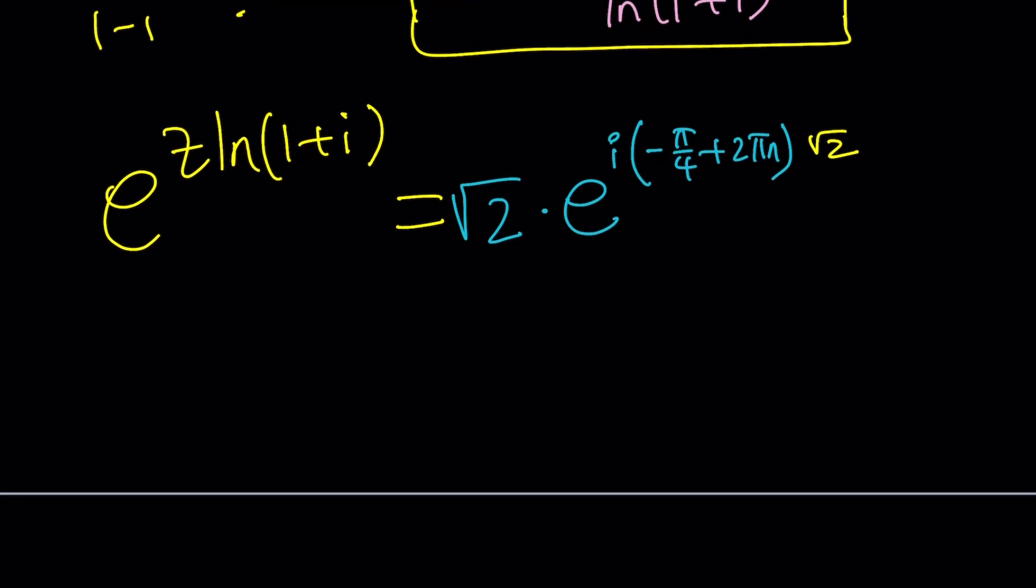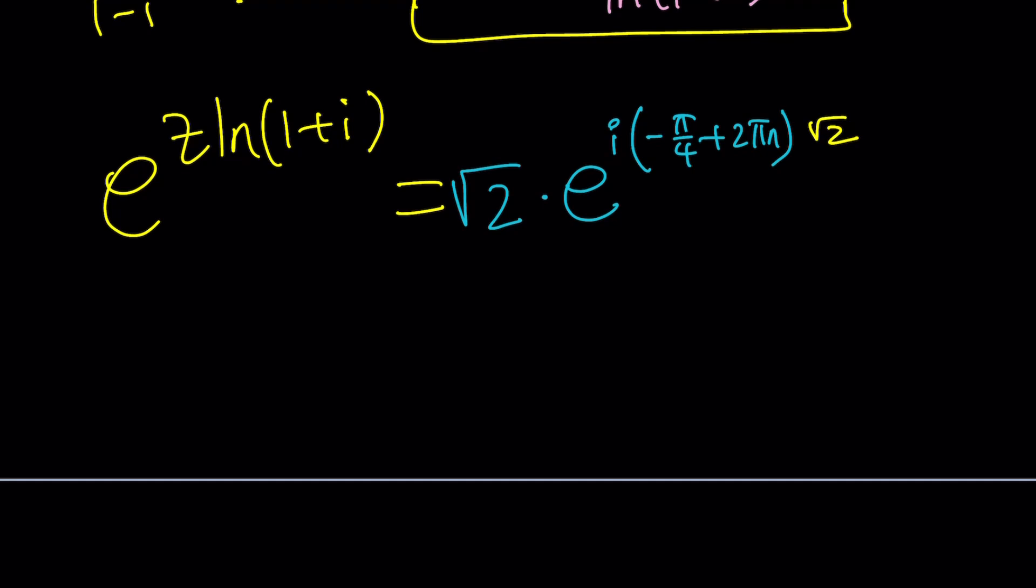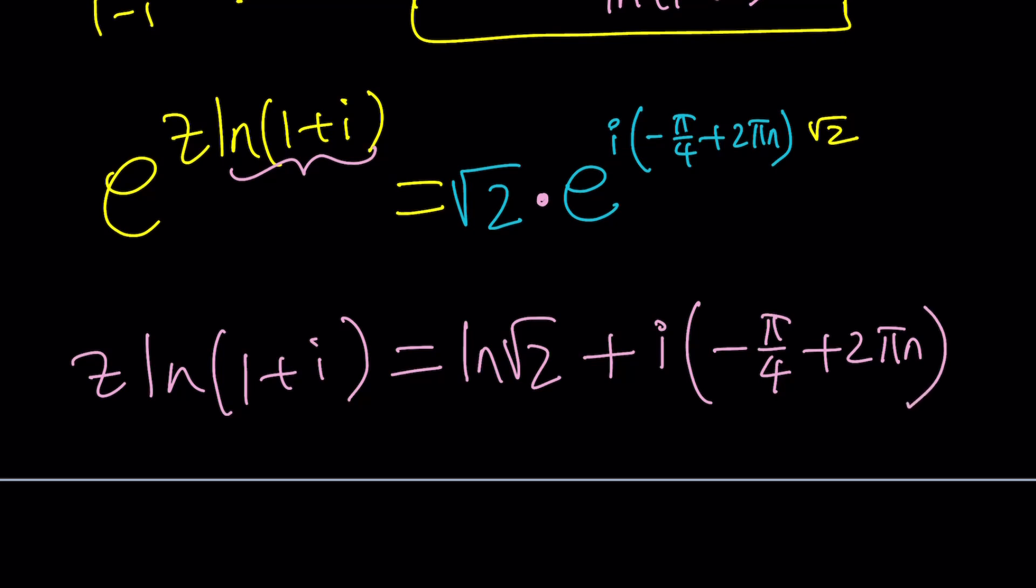Now, what are we going to do next? We do need to natural log both sides. But before that, I want to be able to replace LN 1 plus I with something. Maybe I don't. Let's just LN. We're going to get Z LN 1 plus I. I'll do it next. Equals. When you LN this, you're going to get LN root 2. And when you plus, of course, the log is going to turn the product into a sum. And you're going to be getting I times negative pi over 4 plus 2 pi N. By the way, that square root of 2, I don't know why it stayed there. It shouldn't be there. Okay. Forgot to erase it.